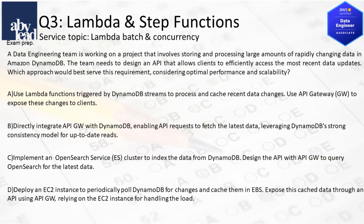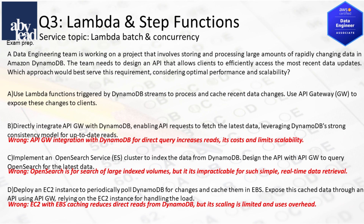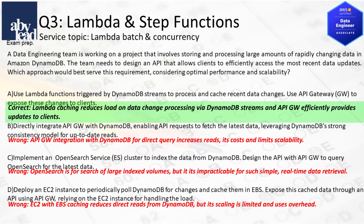Question 3: How do you scalably process rapidly changing large data in DynamoDB for efficient client API access? Don't limit scalability with API Gateway integration in DynamoDB, and OpenSearch is impractical for simple retrievals. EBS caching with limited scaled EC2 compute is also not ideal. Most advisable is to reduce DynamoDB load with Lambda caching for streaming, with API Gateway updates to clients.